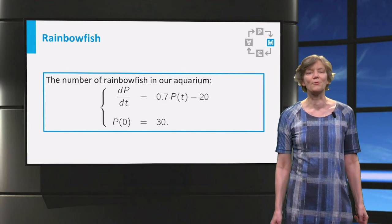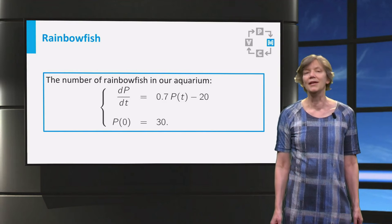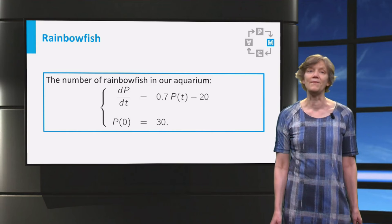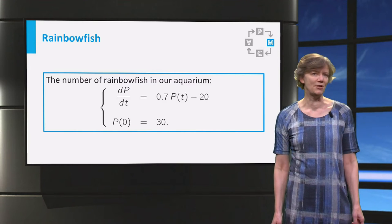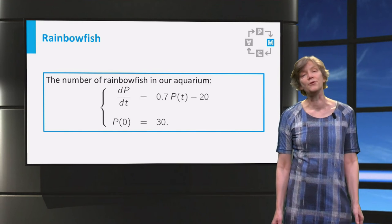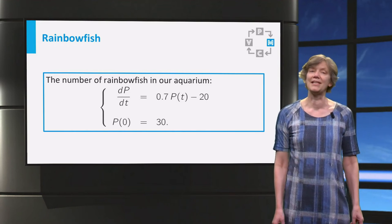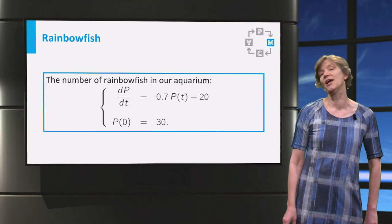The resulting population grows exponentially. That is okay for the first few days, but according to this model there are way too many fish for an aquarium after a few weeks. We tried to curb this growth by selling 20 of the rainbow fish each day.